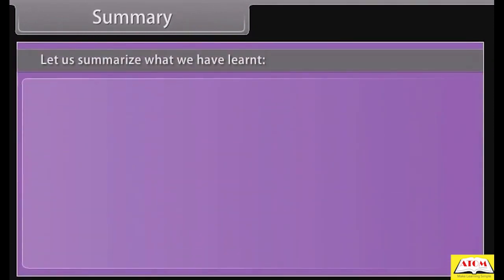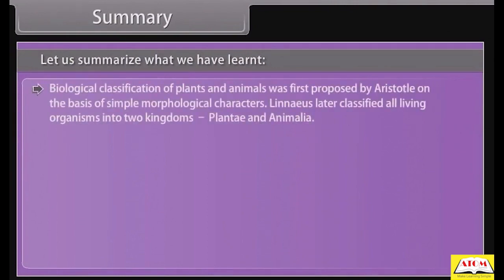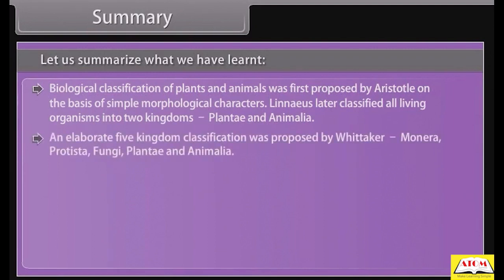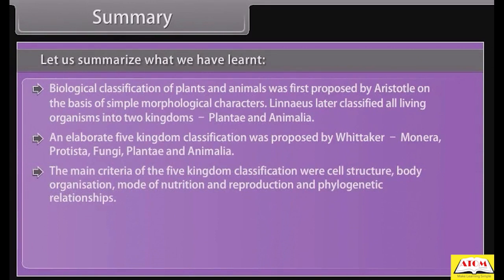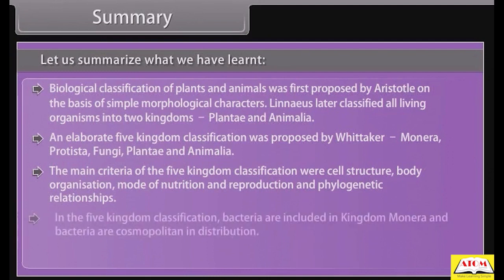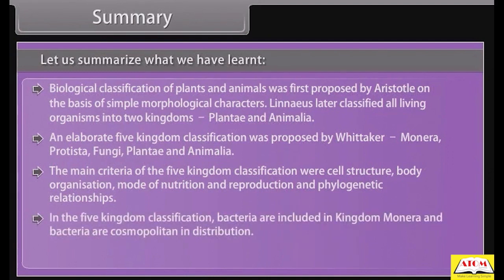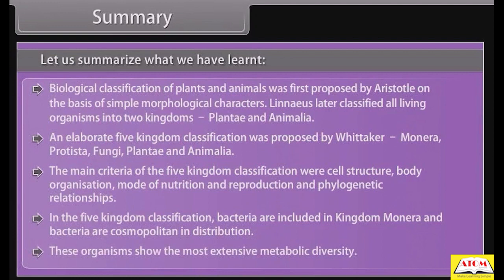Summary: Biological classification of plants and animals was first proposed by Aristotle on the basis of simple morphological characters. Linnaeus later classified all living organisms into two kingdoms: Plantae and Animalia. An elaborate Five Kingdom Classification was proposed by Whittaker: Monera, Protista, Fungi, Plantae, and Animalia. The main criteria were cell structure, body organization, mode of nutrition, reproduction, and phylogenetic relationships. In the Five Kingdom Classification, bacteria are included in Kingdom Monera, and bacteria are cosmopolitan in distribution, showing the most extensive metabolic diversity.